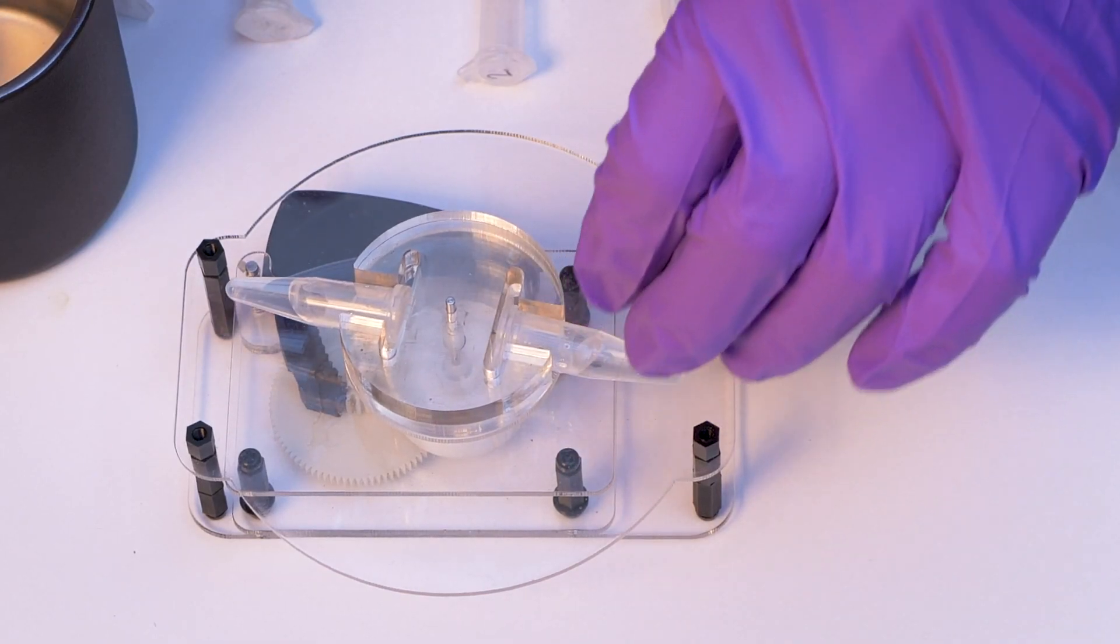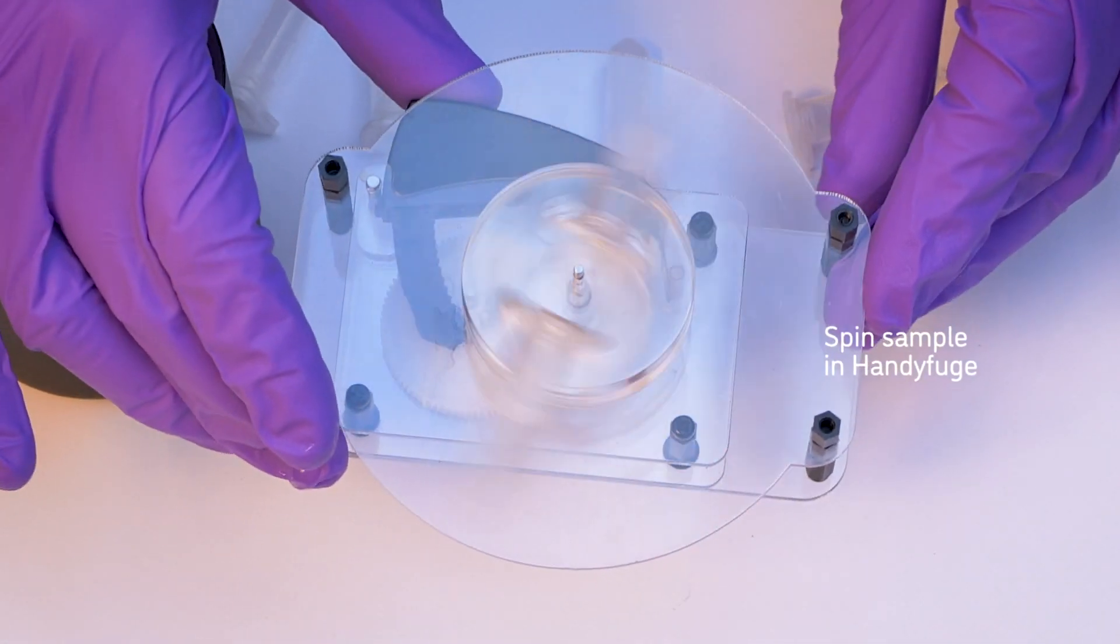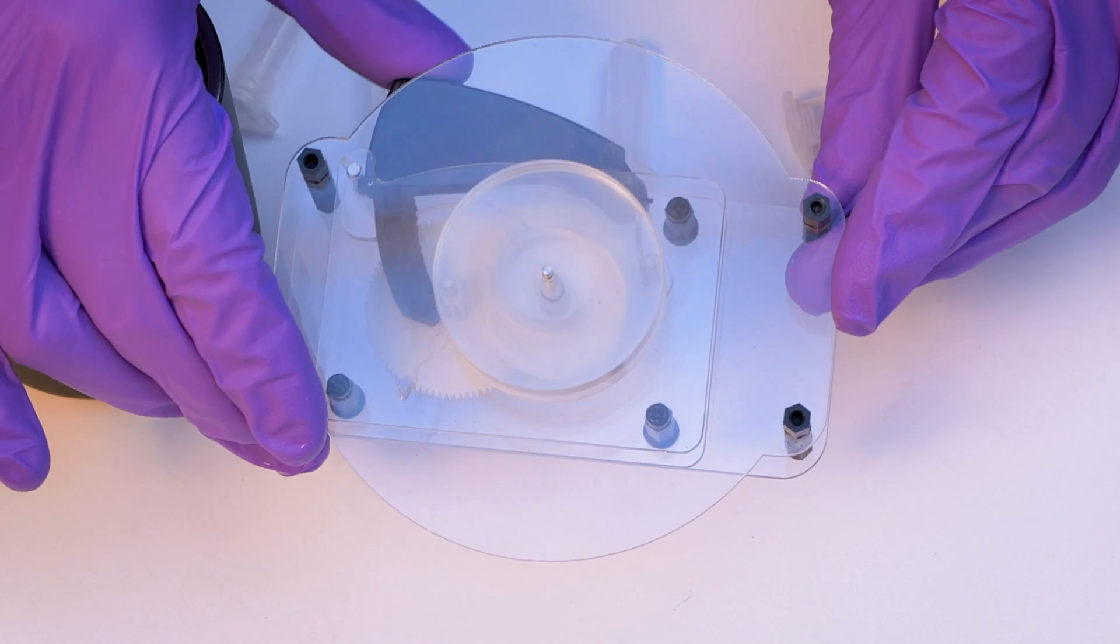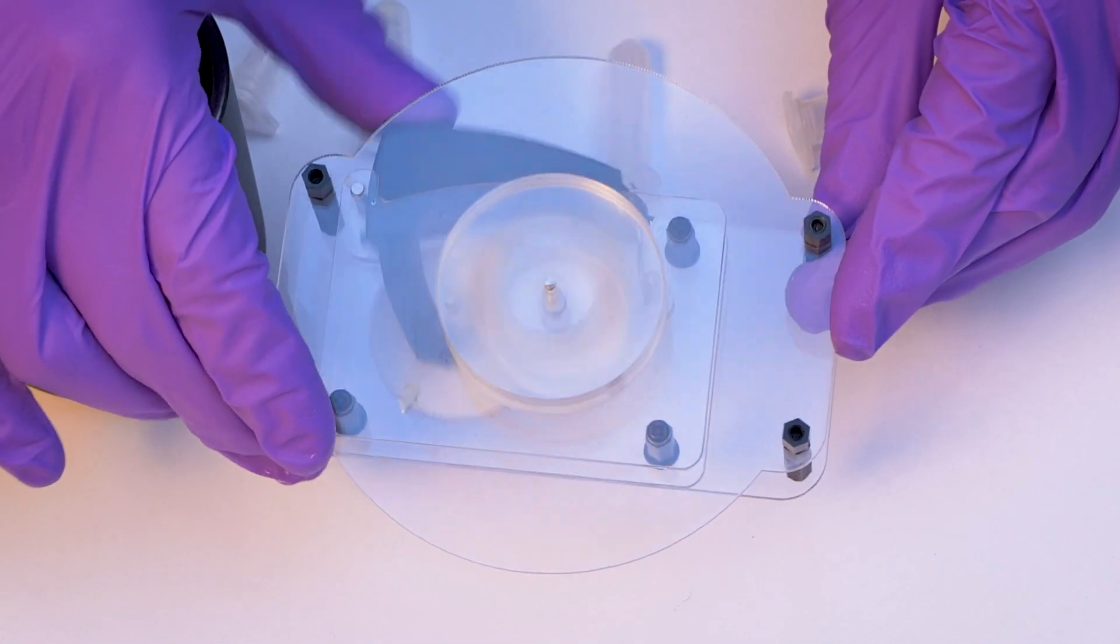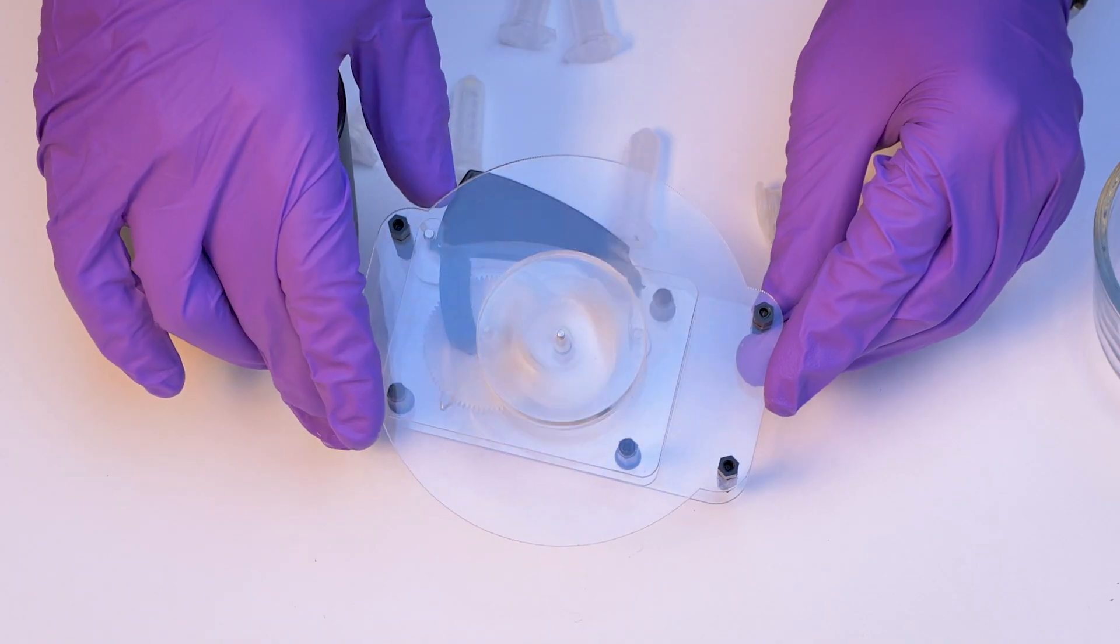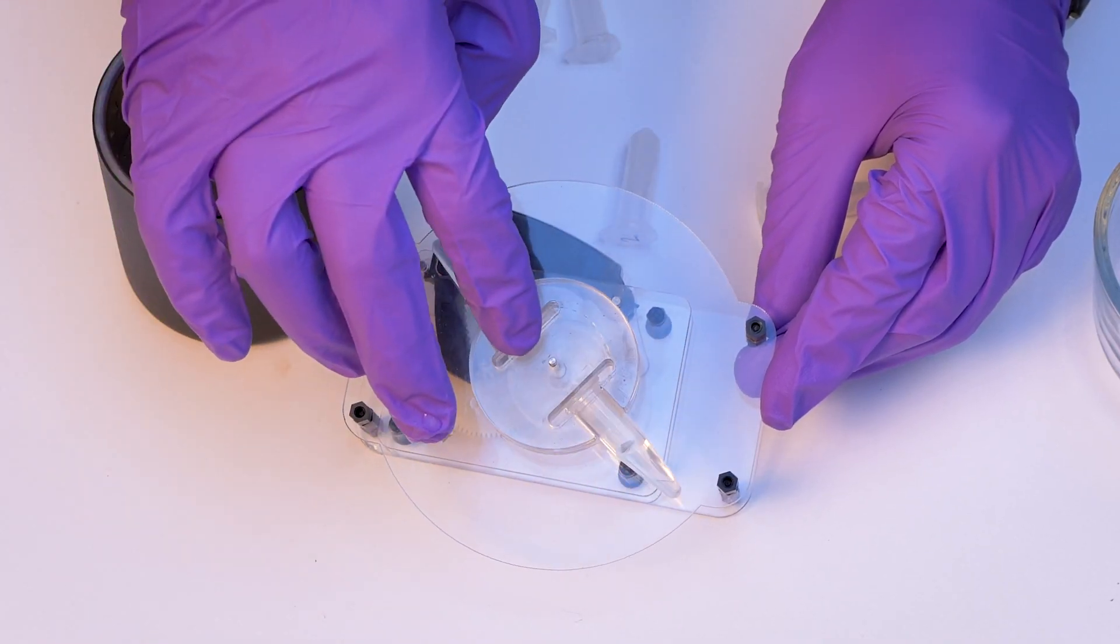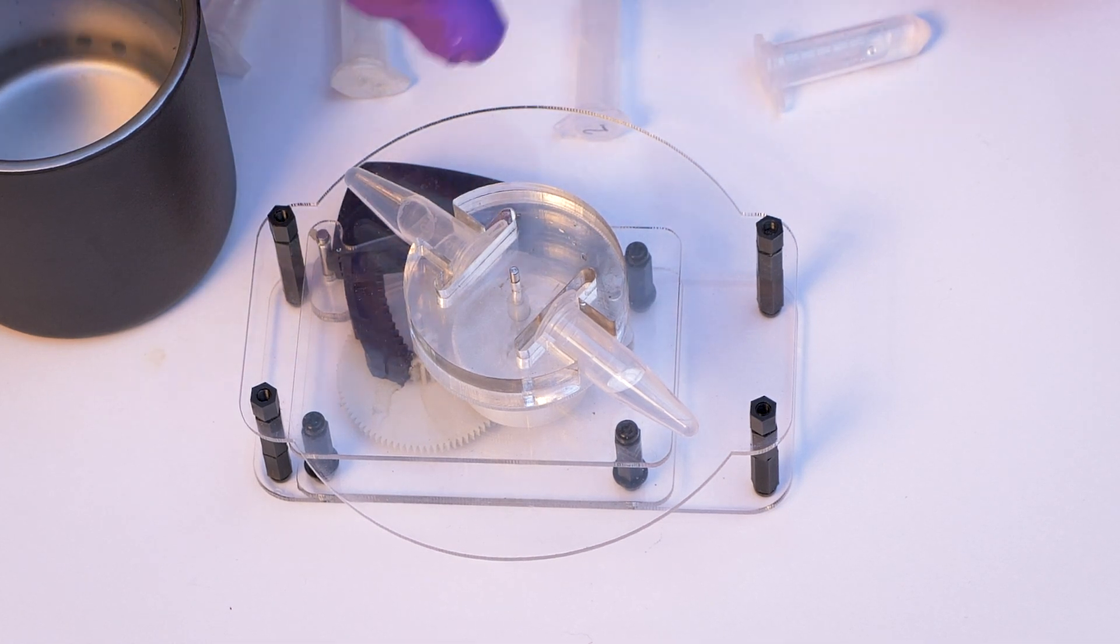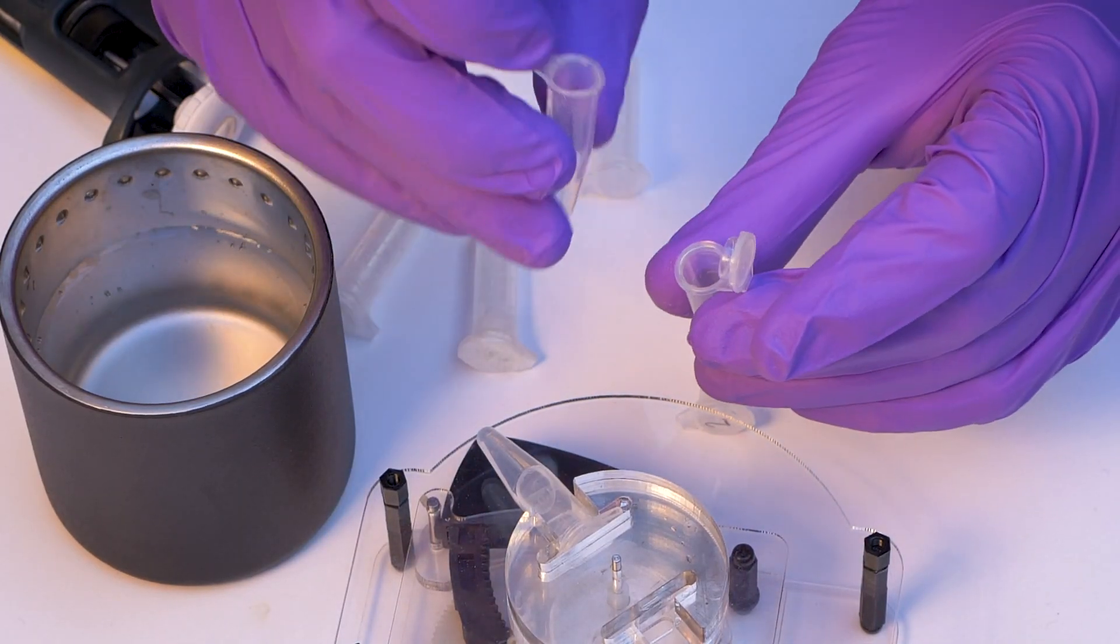The next step will be to spin this in a centrifuge. And so in this step, we spin down anything that will prohibit the reaction that we're going to use in the end to detect the virus. So everything that we don't want will be stuck at the bottom of the tube, and the viral RNA will be in solution. So we transfer it to a new tube.